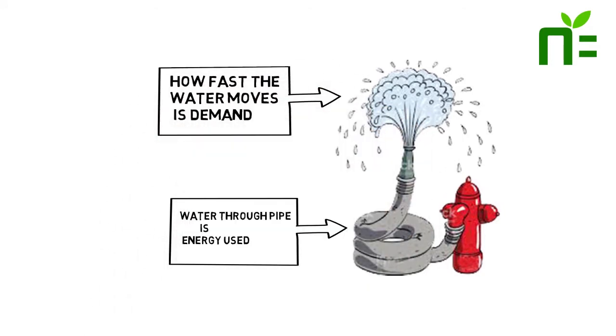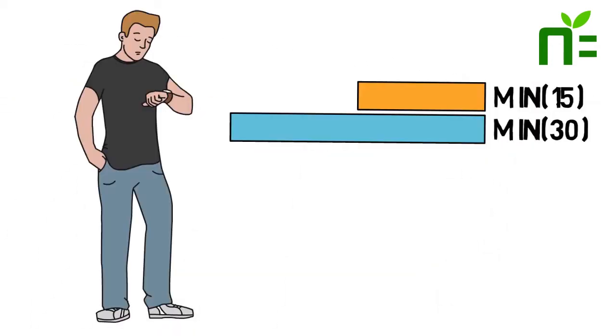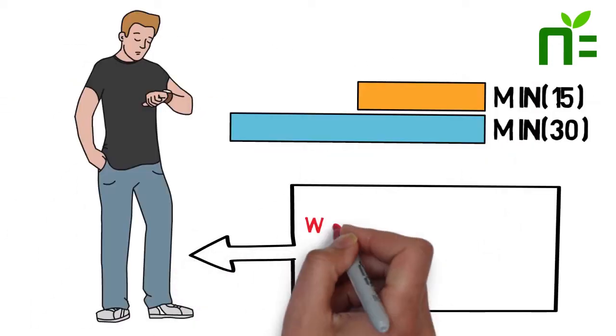The worst half hour or 15 minutes, depending on your rate plan, determines your demand charge.